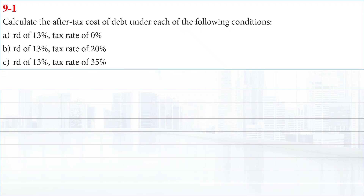Calculate the after-tax cost of debt under each of the following conditions: first, rate of debt is 13 percent and tax rate is zero percent; second, rate of debt is 13 percent and tax rate is 20 percent; third, rate of debt is 13 percent and the tax rate is 35 percent. In each situation we have to find the after-tax cost of debt.